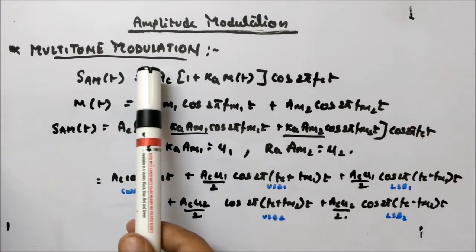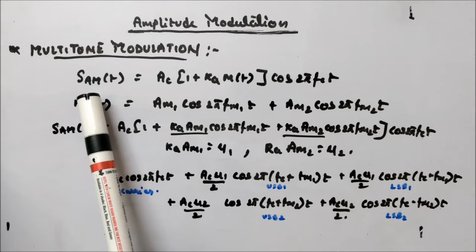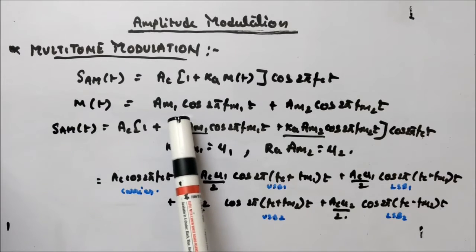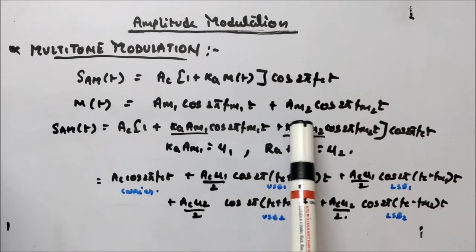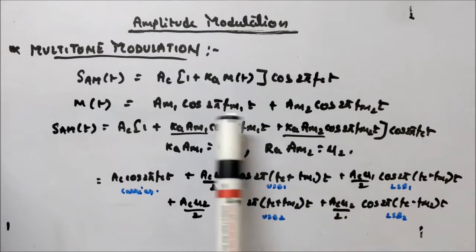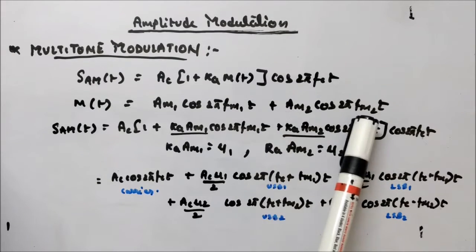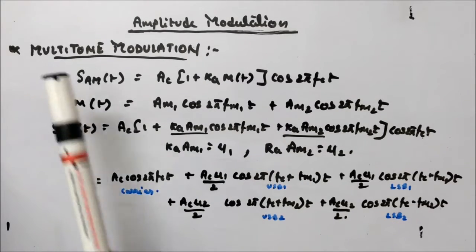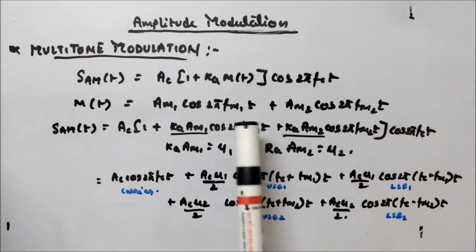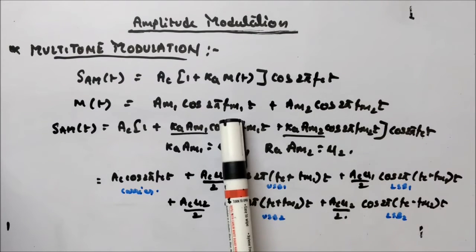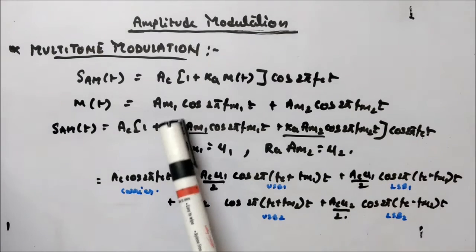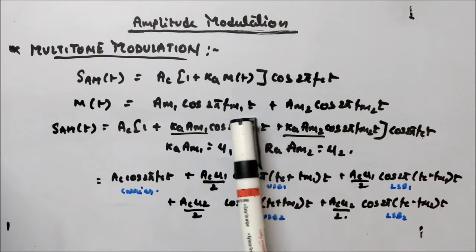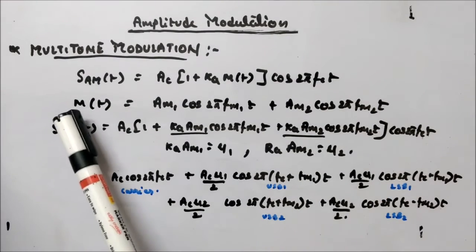Now let's look at the case of multi-tone modulation. We had our AM signal as AC(1 + KA·m(t))·cos(2π·fc·t). Now let m(t) equal AM1·cos(2π·fm1·t) plus AM2·cos(2π·fm2·t). You can see there are two frequency components. Usually when you have more than one frequency component we call it multi-tone. These two frequencies are not equal to each other — that is why I have written fm1 and fm2. Their amplitudes are AM1 and AM2; the amplitude can be the same but the frequency is different. So this is your message signal.